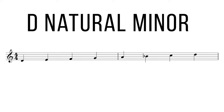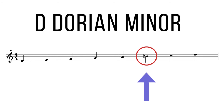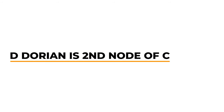To get D Dorian from natural minor, we raise the sixth degree of the natural minor scale up a half step, so we go from B flat to B natural. The notes of the D Dorian scale are D, E, F, G, A, B natural, and C. The D Dorian scale is also considered a mode — Dorian is mode number two, so D Dorian is the second mode of C major.